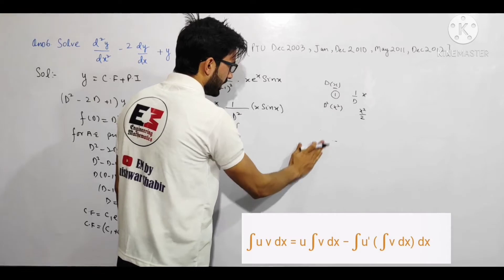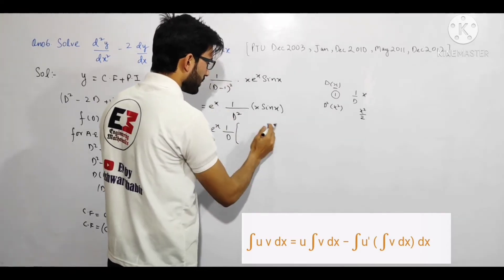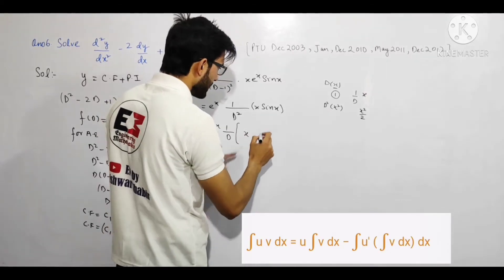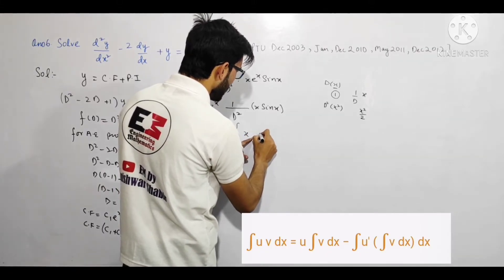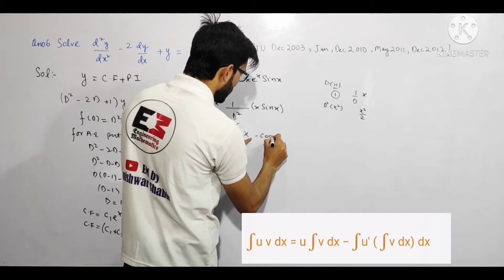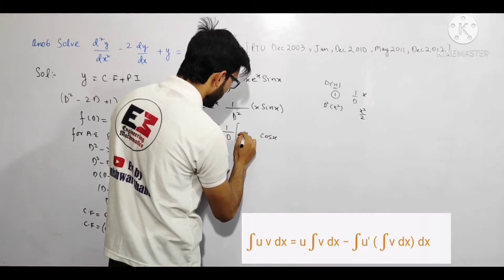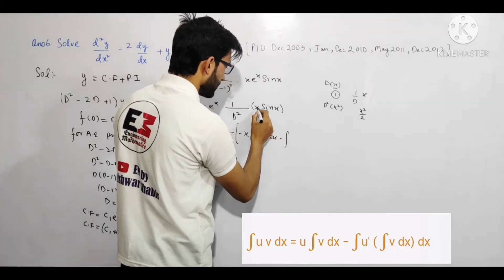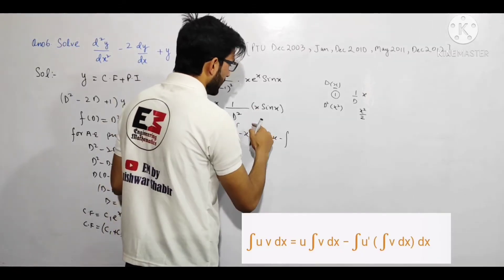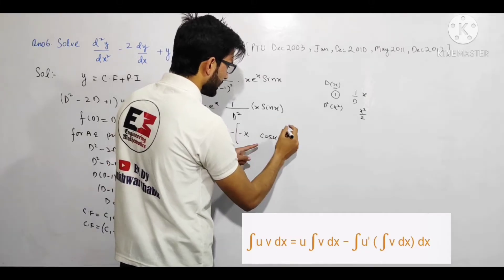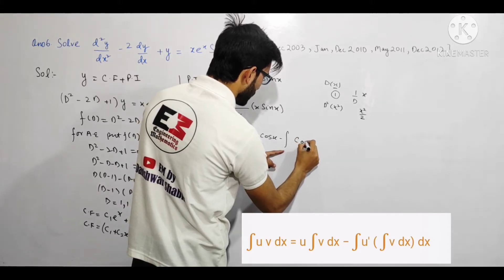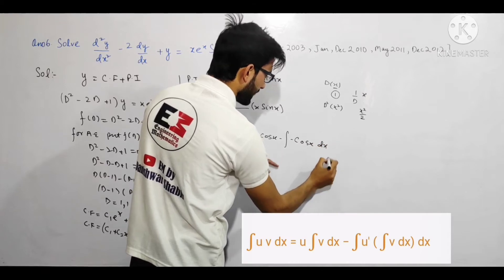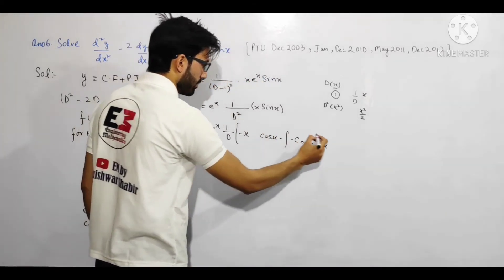Integration by parts apply karte hain: first × integration of second — sin x ka integration (-cos x) hai — minus integration of [differentiation of first × integration of second]. x ka differentiation 1 hai, aur sin x ka integration -cos x hai. Toh result aata hai: -x cos x + ∫cos x dx.